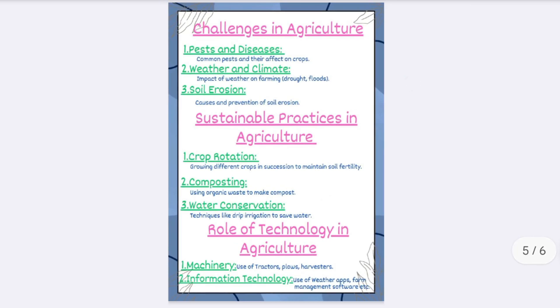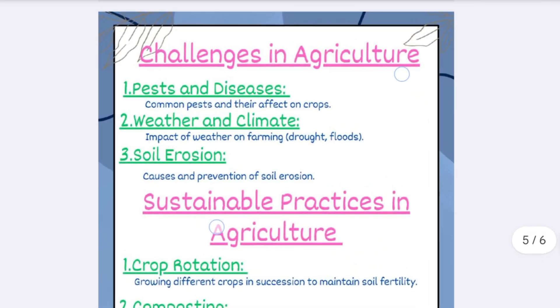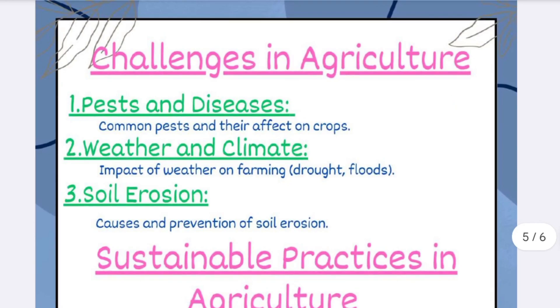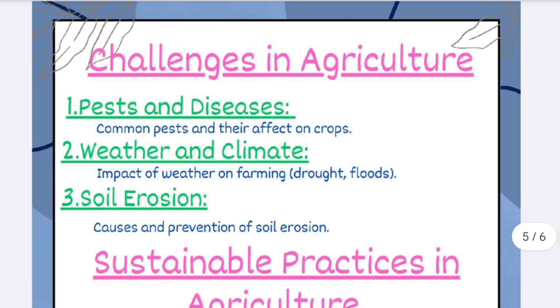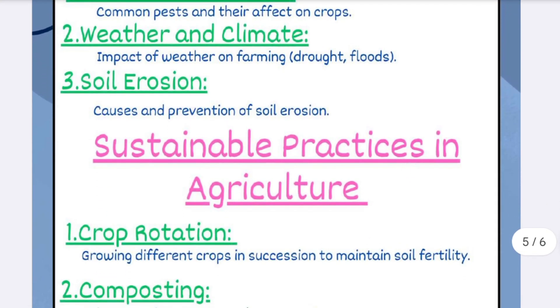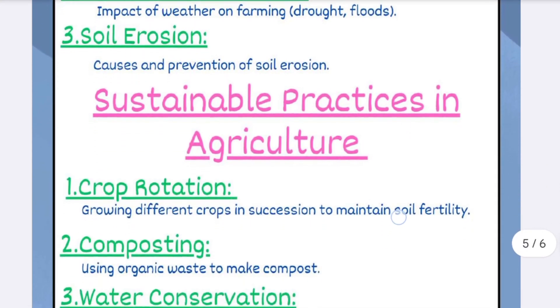Challenges in agriculture: under it, number one, pests and diseases; number two, weather and climate; and the third one is soil erosion.